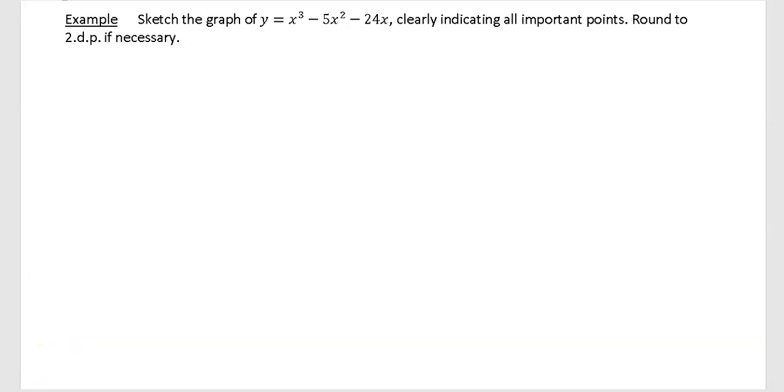The example says sketch the graph of y equals x cubed minus 5x squared minus 24x, clearly indicating all important points and round to two decimal places if necessary. First thing we're going to do is write down our curve: y equals x cubed minus 5x squared minus 24x.